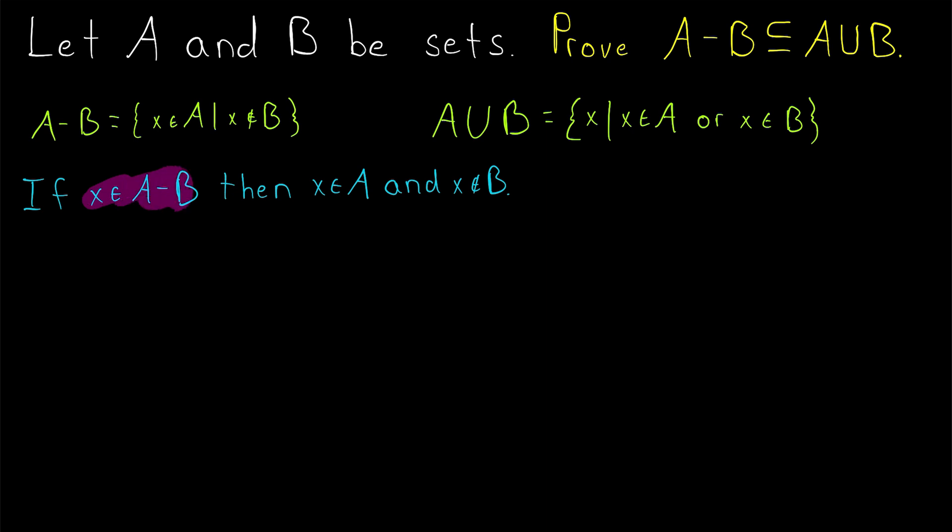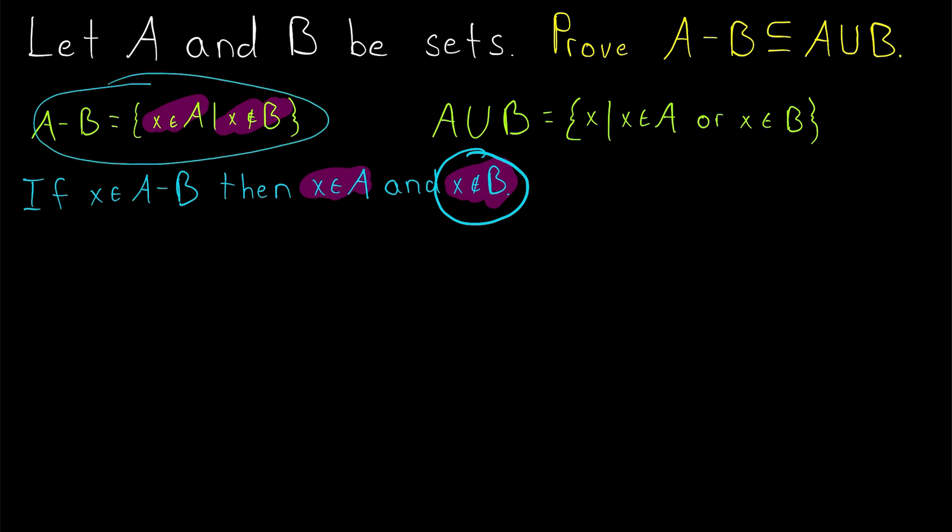In this case, since we're taking an element from A minus B, we know by definition that x is in A and x is not in B. The fact that x is not in B is not actually important for this proof, but I wrote it there anyway, just because that is part of the definition of this set.